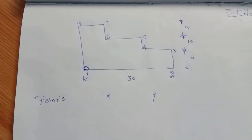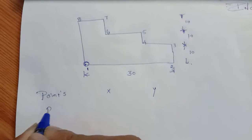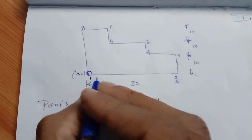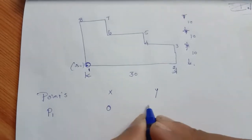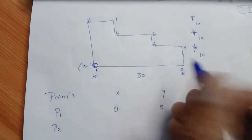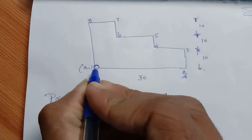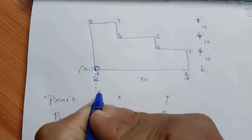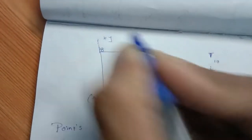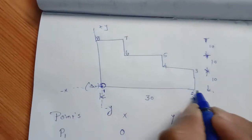P1 starting is 0, 0. Now this is 0, 0. This is P2. P1 to P2 — this is the X value. First we will take the graph. This is the graph; this is the Y direction and this is the Y direction. This is the left side, this is the right side.